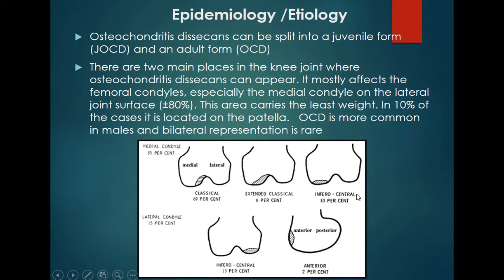Here is a diagrammatic representation of zone-wise distribution: the classic zone accounts for 69%, extended classic 6%, inferocentral 13%, and the anterior portion.